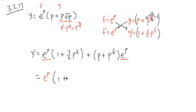And now let's draw in the left over. I have one plus three-half p to the one-half right here. And then for the second part, I have plus p plus p to the three-half right here, right?